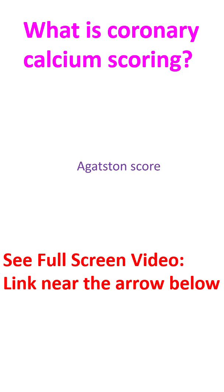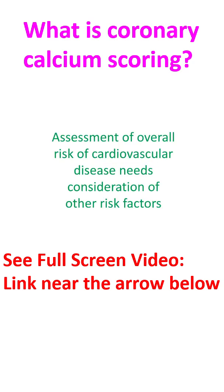A zero score would mean that there are no calcium deposits in the coronary arteries and low risk of myocardial infarction in the near future. Higher the score, higher the risk. A score of 100 to 300 indicates a moderate amount of calcium in the plaques and carries somewhat high risk of myocardial infarction, while a score more than 300 carries a very high risk.